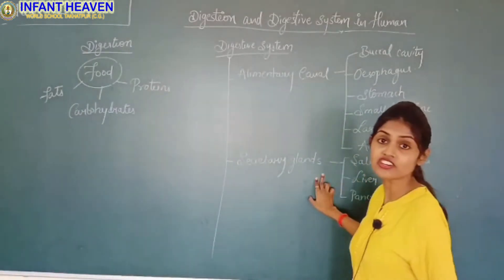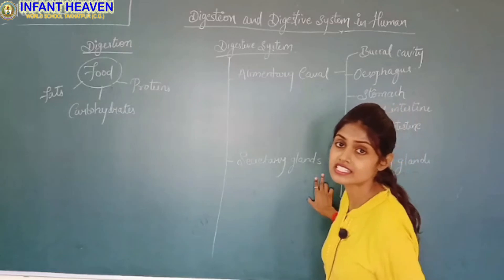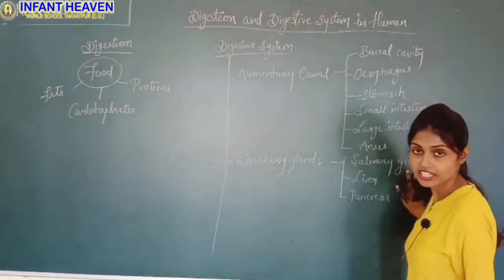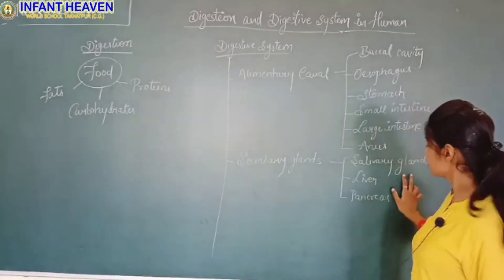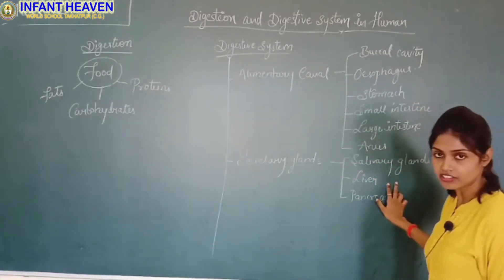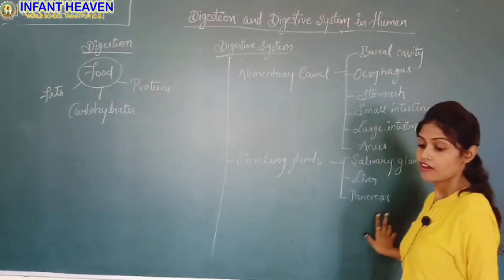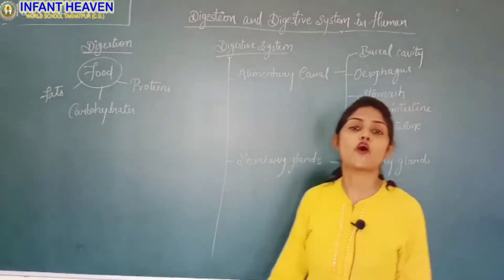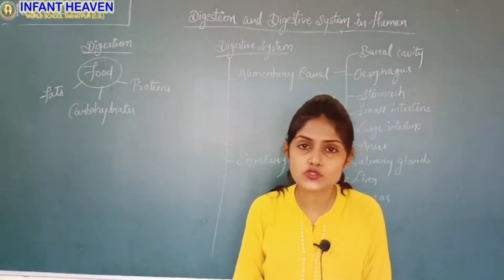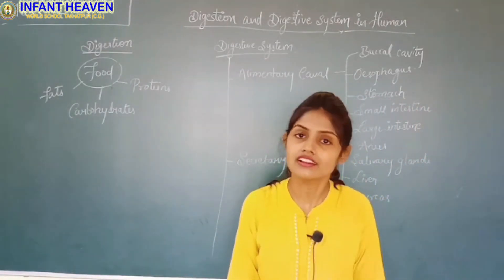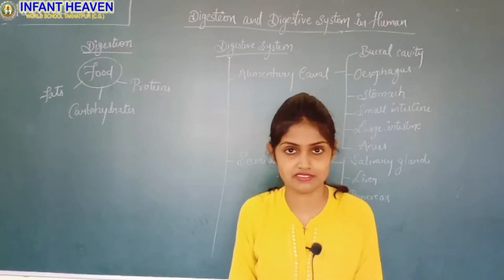Secretory glands consist of salivary glands, liver, and pancreas, which produce different juices that help in digestion.